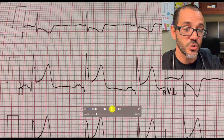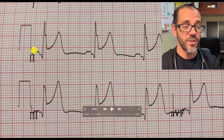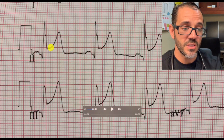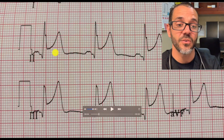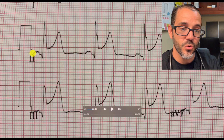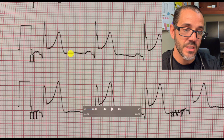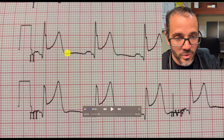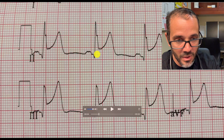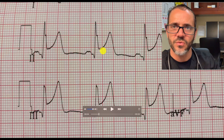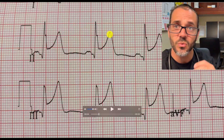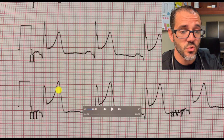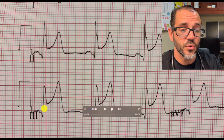You can see lead two. Lead two is very impressive — you can see a gross ST segment elevation. If you throw the line through the TP segment, you can see that this ST is at least two boxes above where it starts concaving and going up. That T wave is very pronounced — a hyper-acute T wave as well.